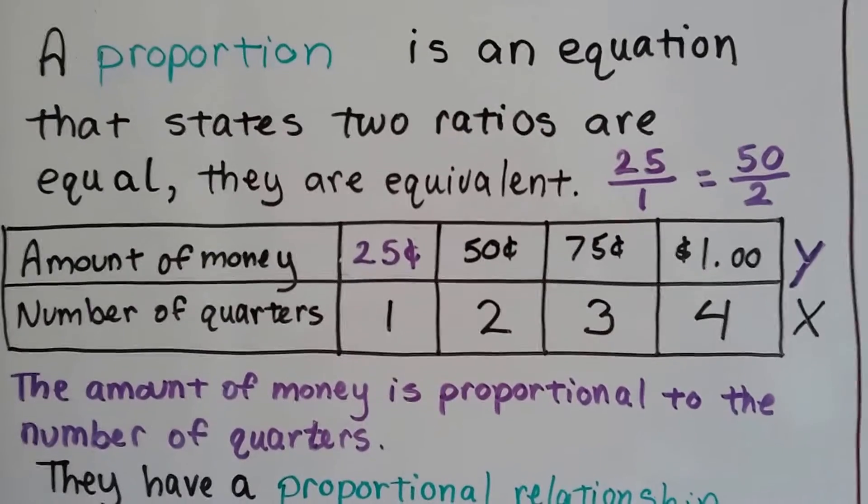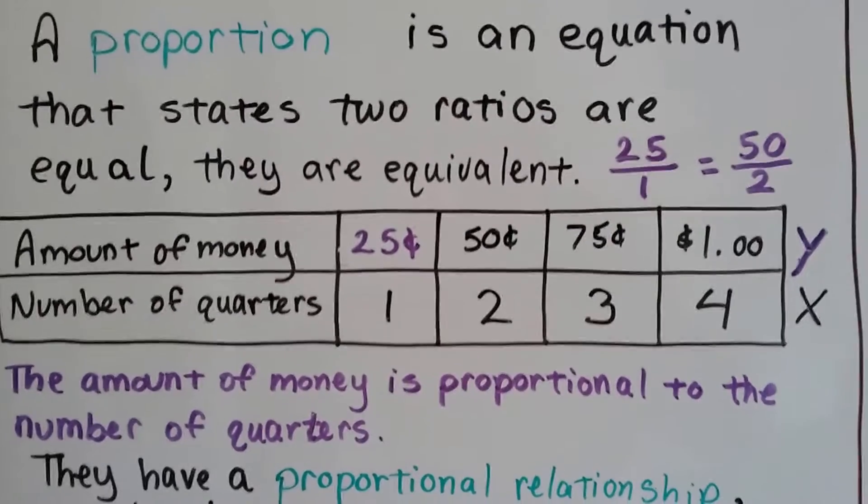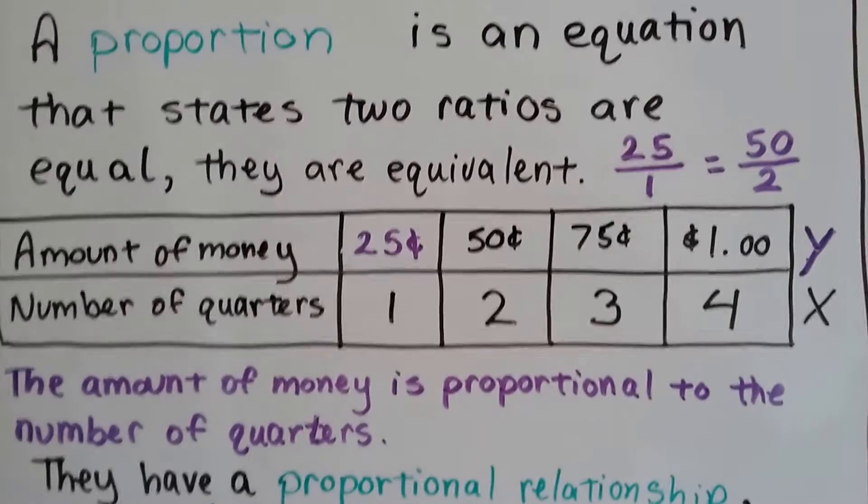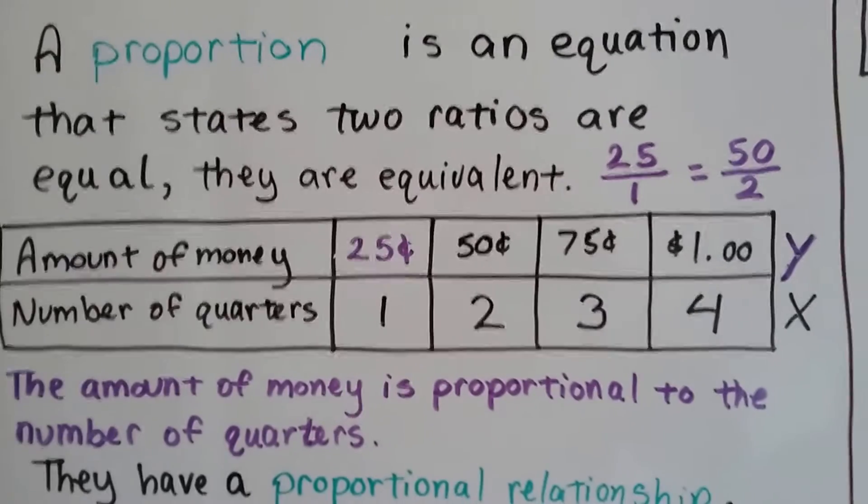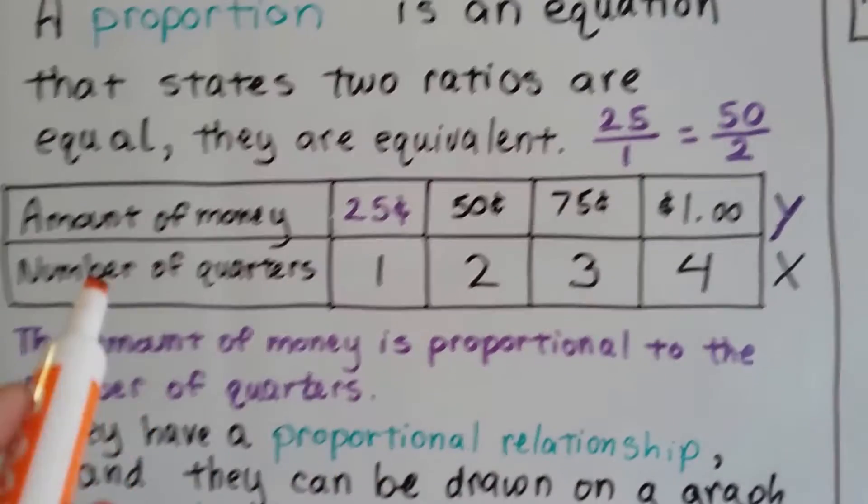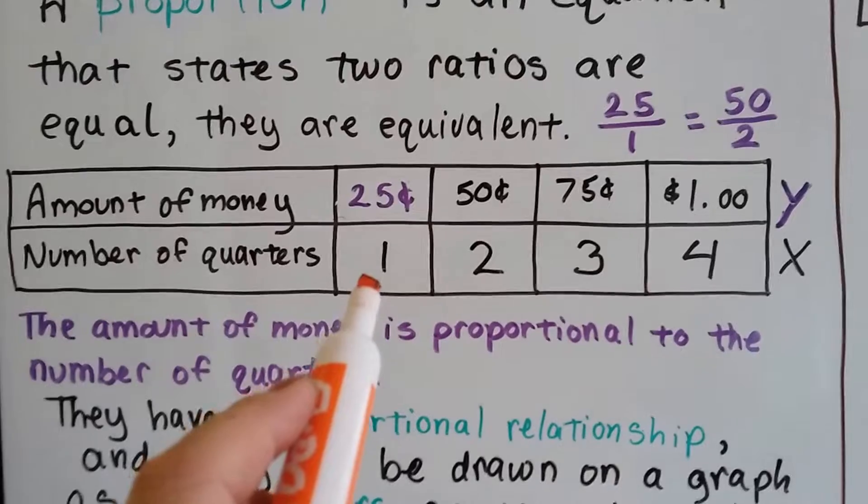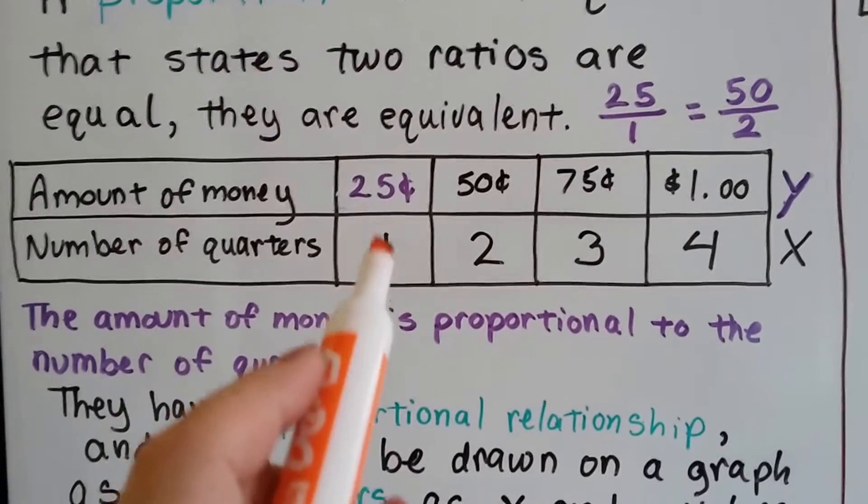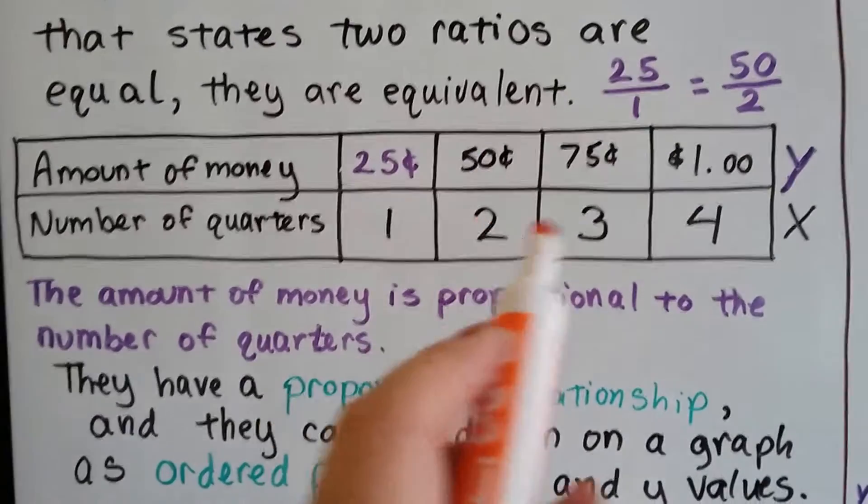So in this table here, we've got 25 over 1 is equal to 50 over 2. 25 divided by 1 equals 50 divided by 2. Because we've got the amount of money as 25 cents over the number of quarters we have. So 1 quarter is 25 cents, 2 quarters is 50 cents.